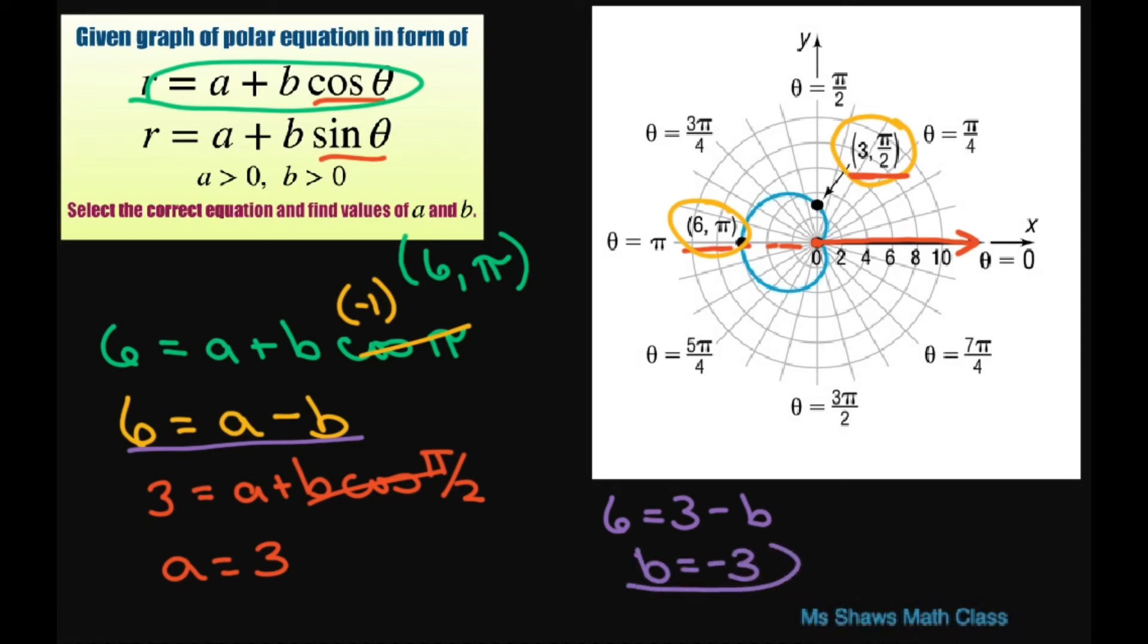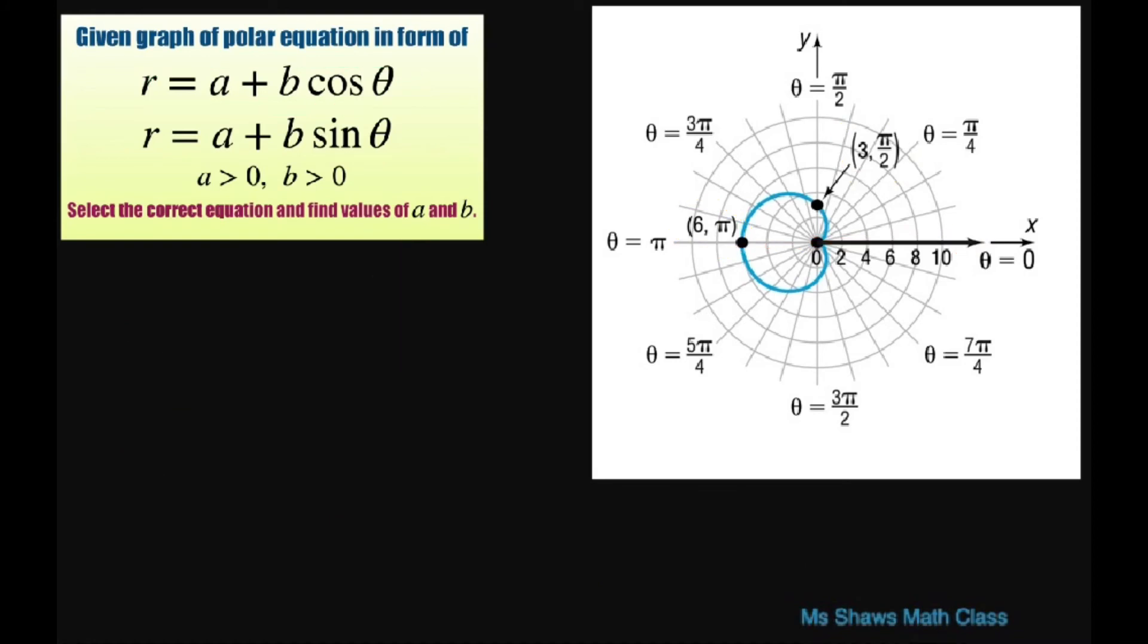Alright. Now that we have that, we can write our equation. So let's write it. Our A is going to be equal to 3 and our B equals negative 3. So our R equals 3 minus 3 cosine of theta.